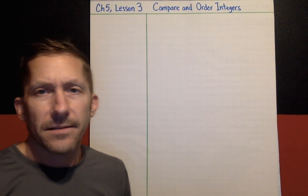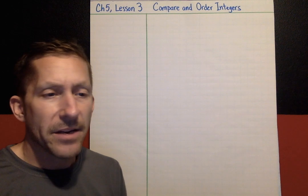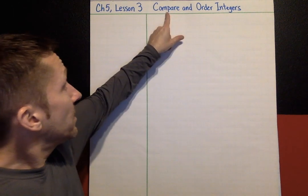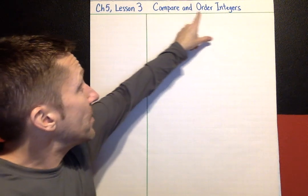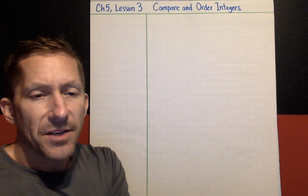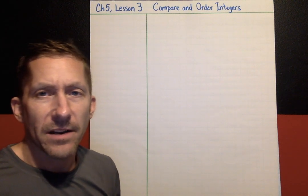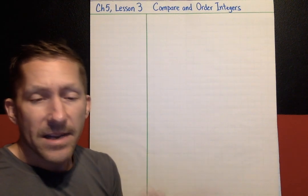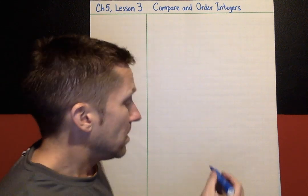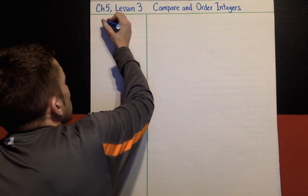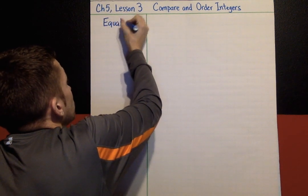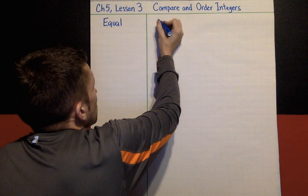Hi again kids, this is Chapter 5, Lesson 3. The topic of this lesson is how do you compare and order integers. At the end of this lesson you should have a strategy for comparing and ordering any number of integers. Everybody knows what an equal sign is — I'm going to write down 'equal' and you know that symbol.